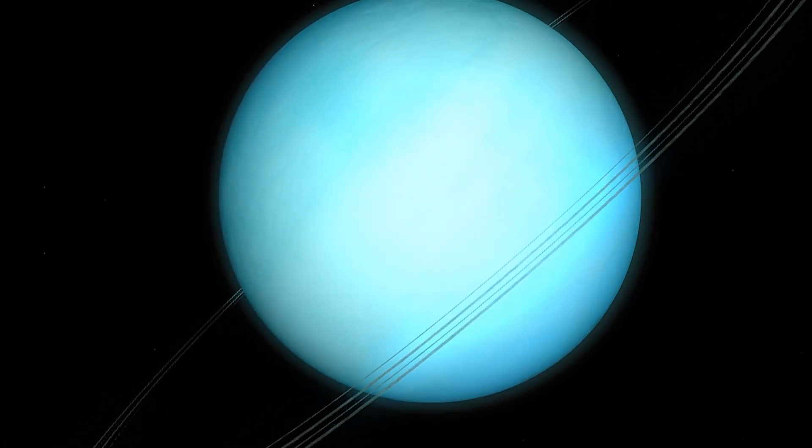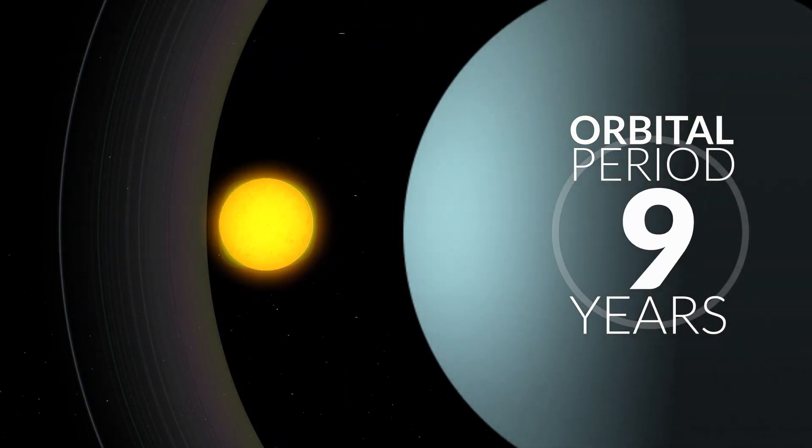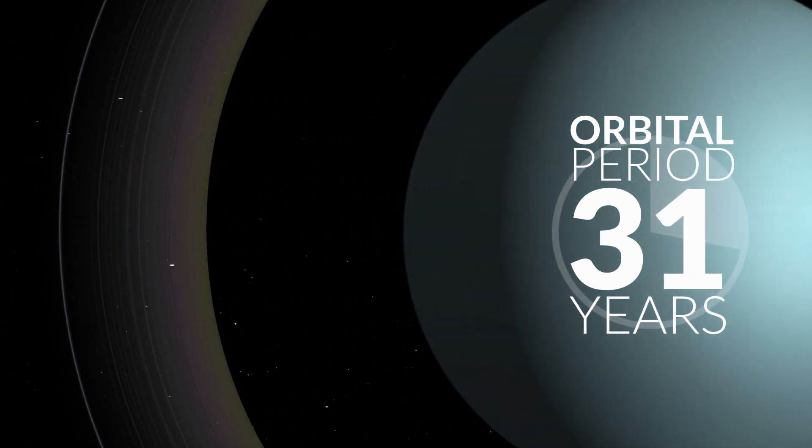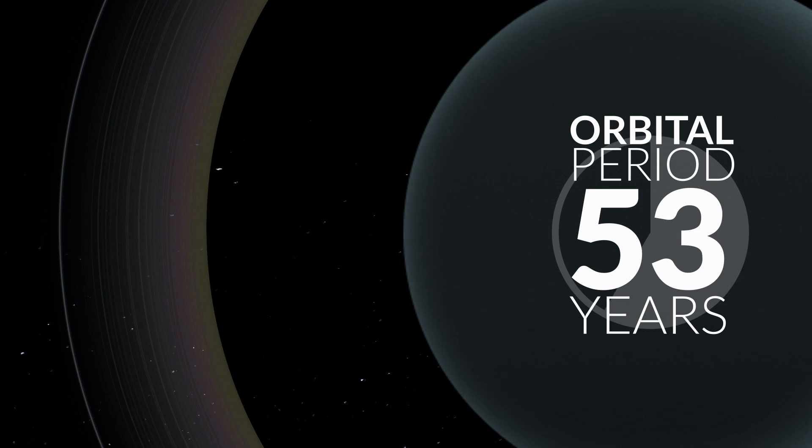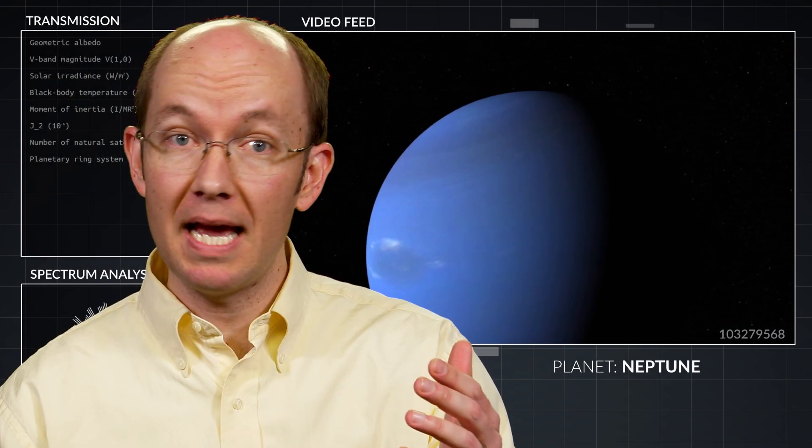Since the planet rotates in this sideways fashion, each hemisphere experiences constant daylight one half of its orbit, which totals 84 Earth years.